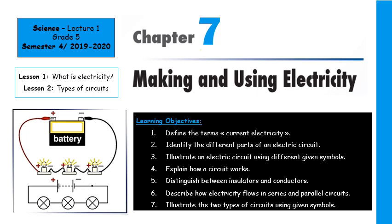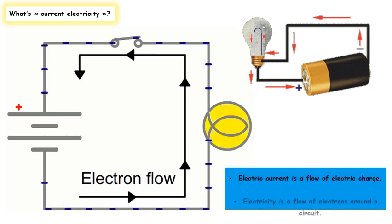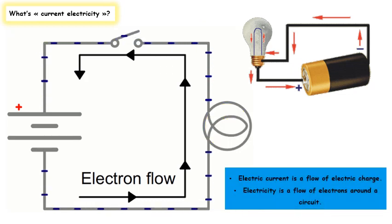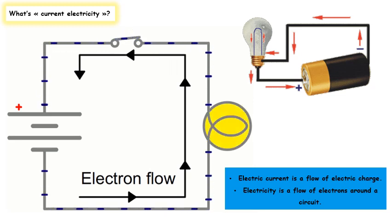In order to answer the question shown in the slide, we have first to define electricity. Electricity is a kind of energy that can stay in one place, but also flow from one place to another. Electricity that moves from one place to another is called current electricity.